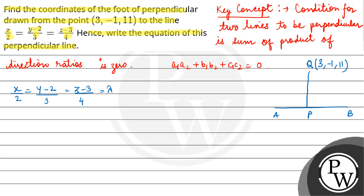Here we have the equation where x = 2λ, y = 3λ + 2, and z = 4λ + 3. So point P coordinates will be (2λ, 3λ + 2, 4λ + 3). P is a point on the line.